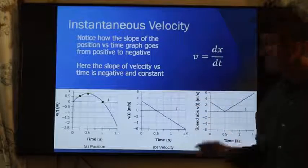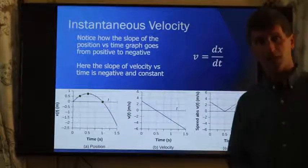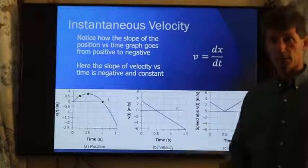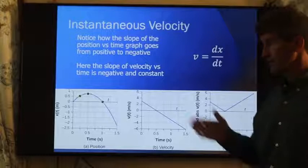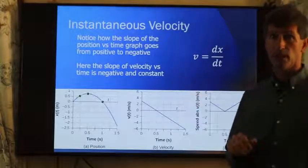The slope is positive before this point right here, at time one half second. And from one half second on, or I should say after one half second, at one half second, the velocity is zero because the slope is zero. The tangent line is downhill, so it would be negative velocity.